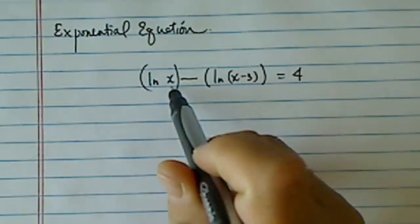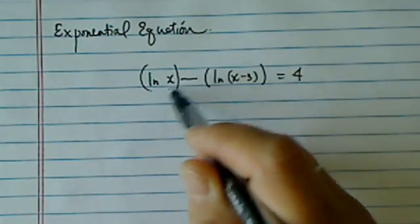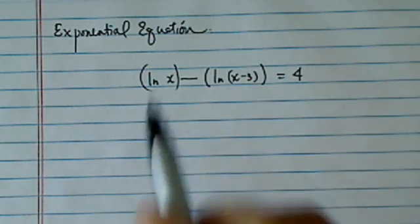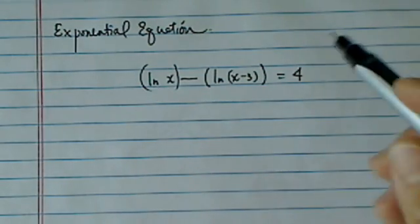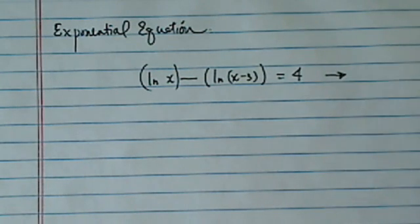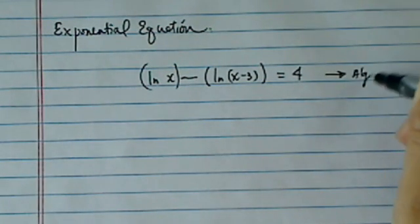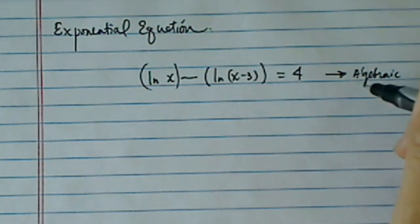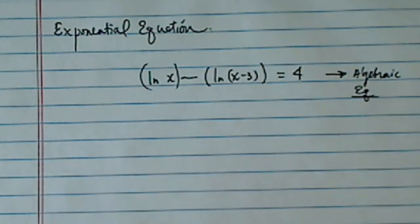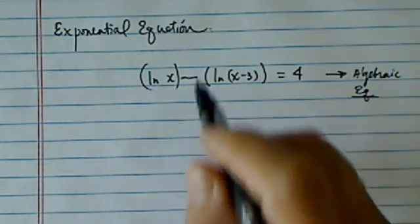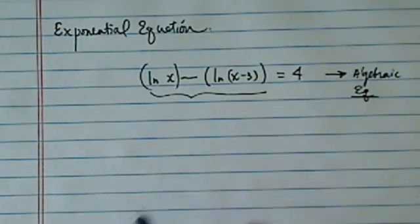The problem with exponential equations is that the variable is buried inside the natural log. So what we need to do is reduce this down to a familiar algebraic equation where the variable is actually on the floor, so to speak. One thing we can do is we've got to combine them first.